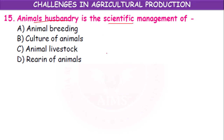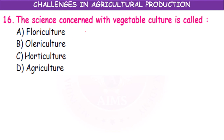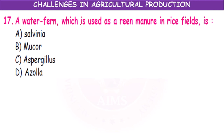The science concerned with vegetable culture is called horticulture. Rearing or culturing of fruit-yielding, vegetable-yielding, and flower-yielding plants is called horticulture. A water fern used as green manure in rice fields — the options are Salvia, Mucor, Aspergillus, and Azolla. Azolla is a water fern used as green manure in rice fields.